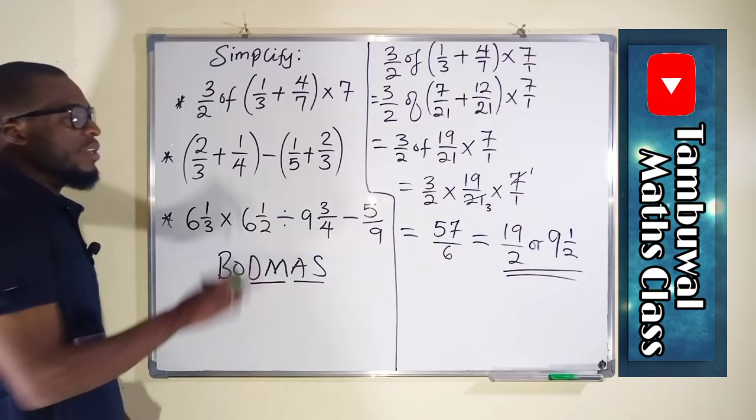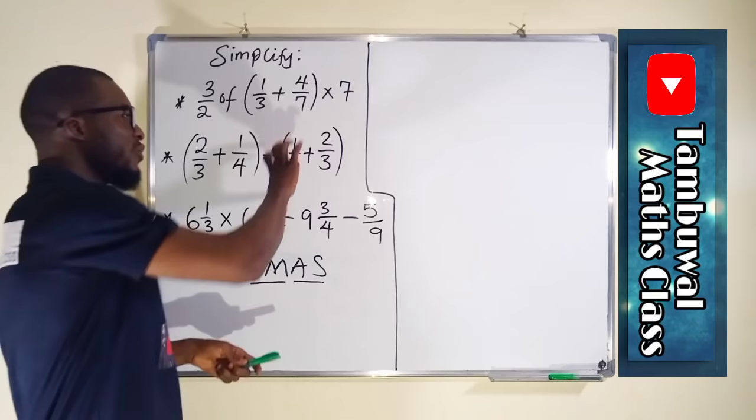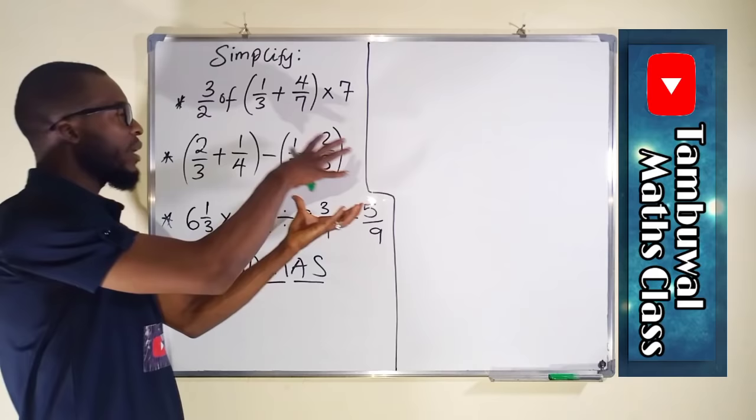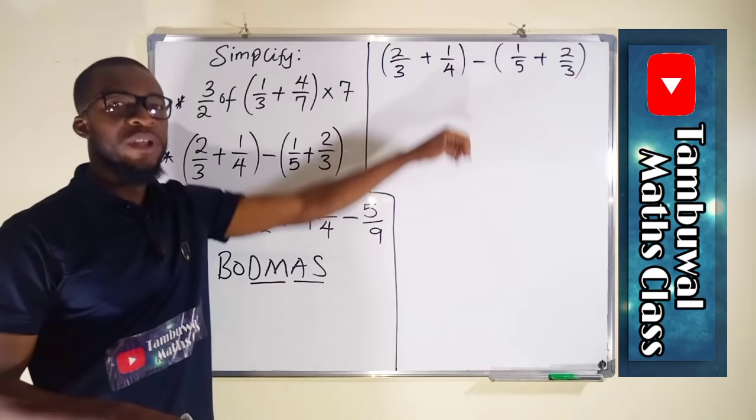The next question has two brackets separated by a negative sign, meaning we subtract the entire second bracket from the first. Since bracket comes first in BODMAS, and there is no specification about which bracket to start with, we can work on both brackets simultaneously. Let us convert their denominators into the same value.